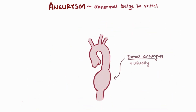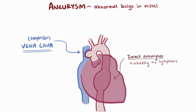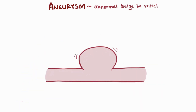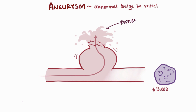Intact aneurysms are usually asymptomatic, though the bulging blood vessel can compress organs or vessels around it. For example, if an aneurysm compresses a major vein like the inferior or superior vena cava, it could decrease blood returning to the heart. The big worry with aneurysms, however, is rupture. When an aneurysm ruptures, it's like a water main break — blood spews out of the hole and less blood flows downstream, causing ischemia in that downstream tissue.